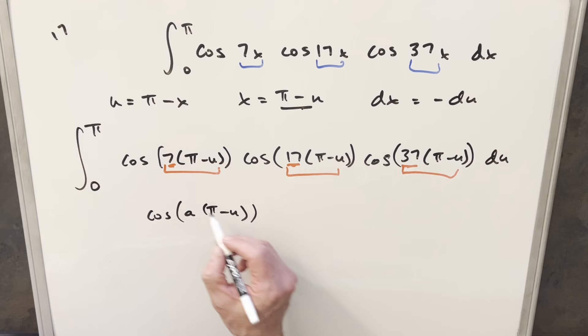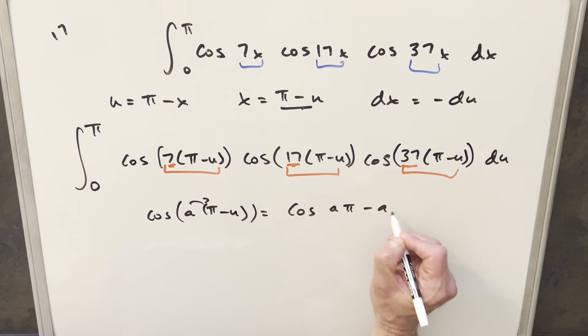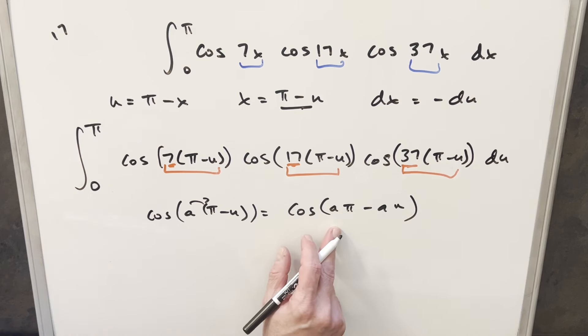But what I want to do is kind of see what happens in general, like without trying to figure out what happens exactly at 37. Let's just kind of generalize this and let's look at what happens if we have cosine a pi minus u. And then I think what I want to do is just distribute that a in. So I can just write this as cosine a pi minus a u.